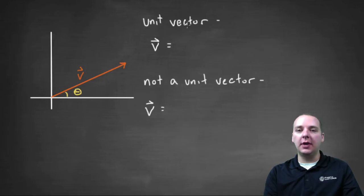If it's a unit vector, this is very straightforward. If it has length one, then we can get the i-th component and the j-th component simply from the angle.